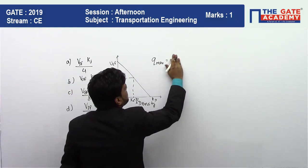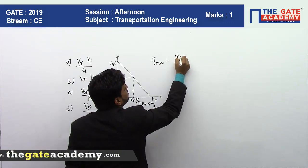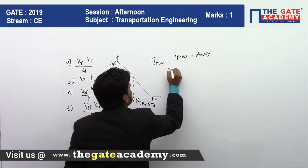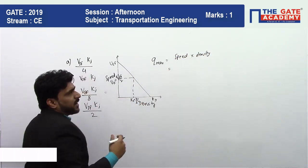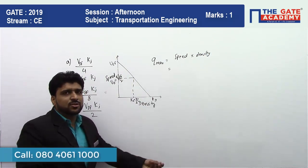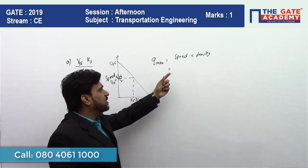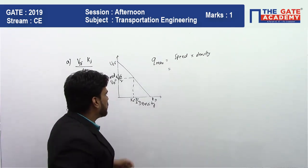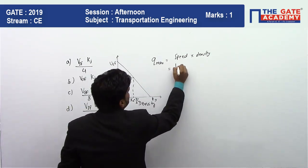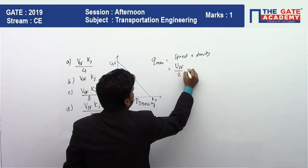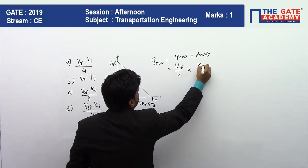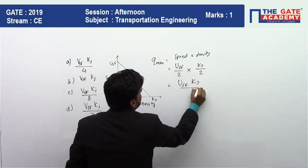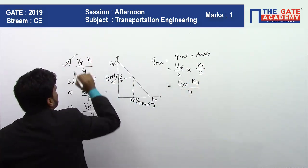For maximum capacity, we know that flow equals speed multiplied by density. Maximum flow on the road occurs when vehicles travel at the optimum speed and the road is at optimum density. So speed is Usf/2 (free flow speed divided by 2) and density is kg/2 (jam density divided by 2). Therefore, maximum flow = Usf/2 × kg/2 = Usf × kg / 4. The answer is option A.